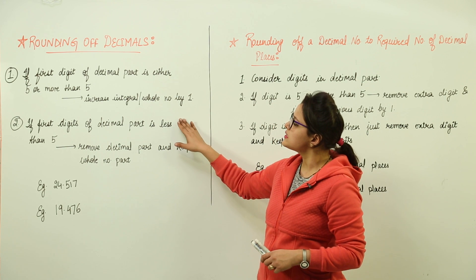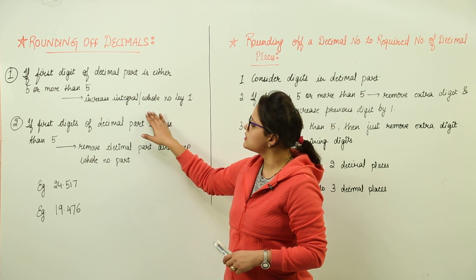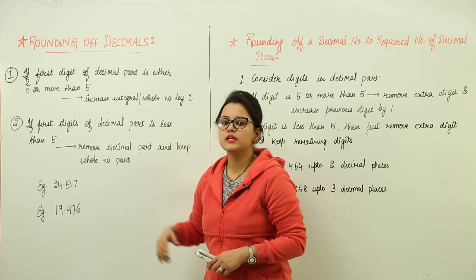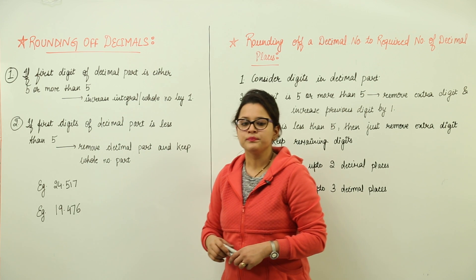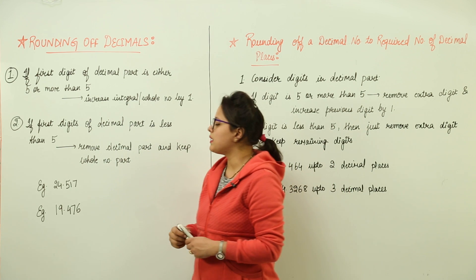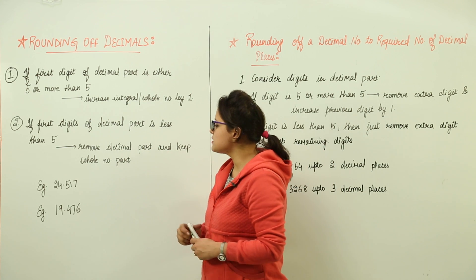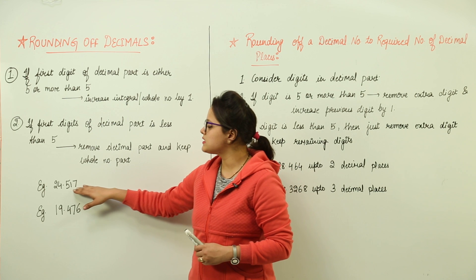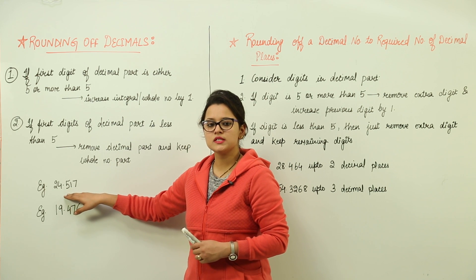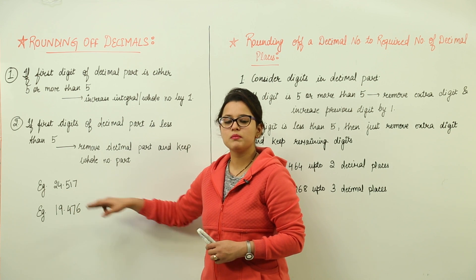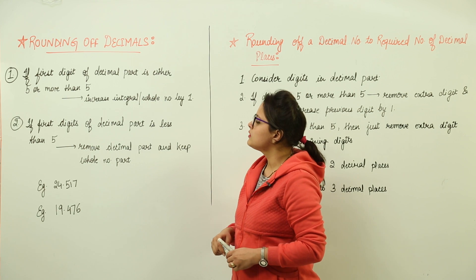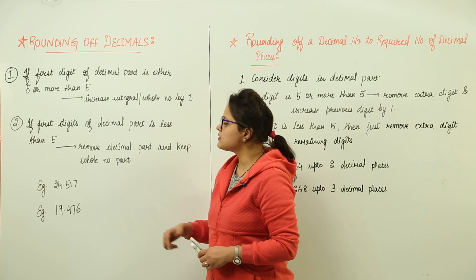The first rule is if the first digit of the decimal part is either 5 or more than 5. As we discussed, a decimal has an integral part before the decimal point and a decimal part after the decimal point. So we have to consider.